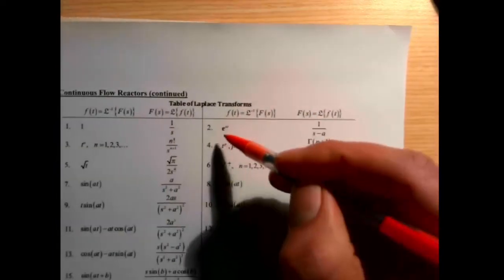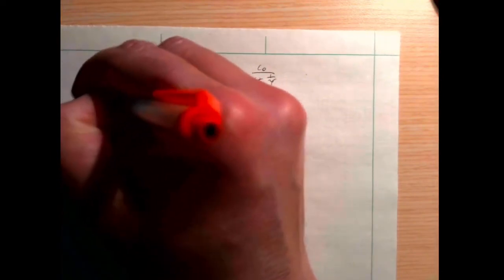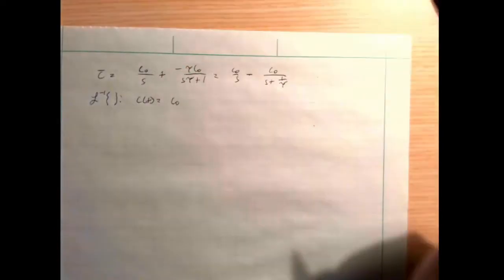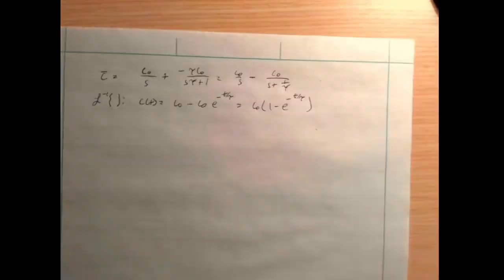Rewriting it this way makes it easier to recognize in the Laplace transform table. The first term is a 1/s which just becomes 1, and the second term is a 1/(s − a) form where a is negative 1/tau. Taking the inverse Laplace transform gives C(t) equals C₀ times (1 − e^(−t/tau)). That's how we solve the tracer step input for a well-mixed tank.